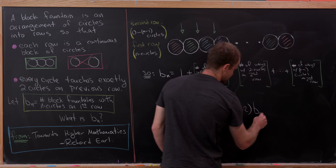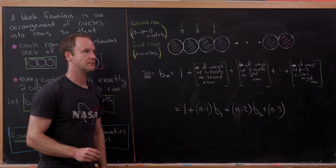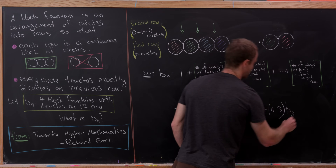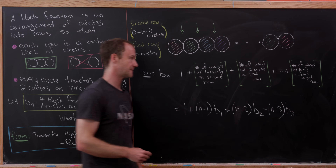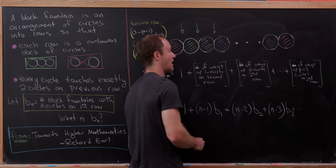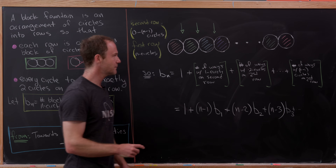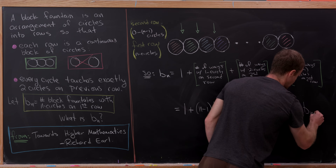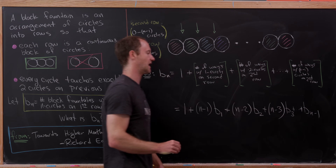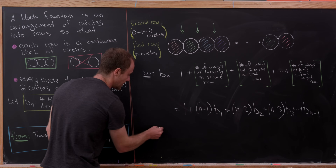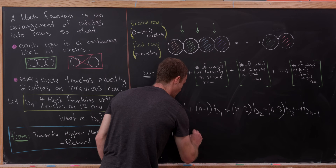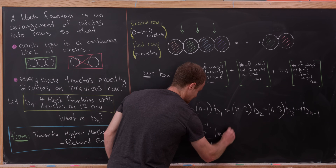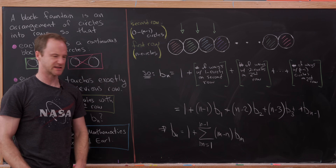For three circles on the second row, there are n minus 3 positions, giving n minus 3 times b_3. This continues all the way up: for n minus 1 circles there is only one spot, giving 1 times b_{n-1}. Putting it all together: b_n = 1 + the sum as m goes from 1 to n minus 1 of (n minus m) times b_m.